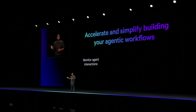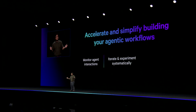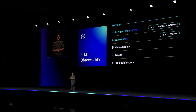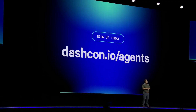So to recap, we've just seen how Datadog's LLM observability can help us monitor how our agents interact, run experiments to test our changes, and debug and troubleshoot errors all in one single platform. We support all popular agentic frameworks such as OpenAI Agents, CrewAI, LangGraph, Pydantic AI, Mistral Agents, Google's ADK, Amazon Bedrock, and more. We're excited to get this into your hands. Sign up today at dashcon.io/agents. We look forward to working with you towards an agentic future.